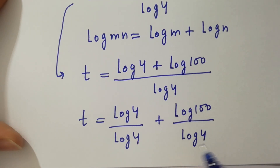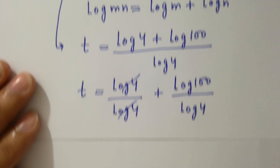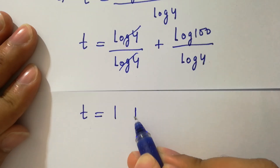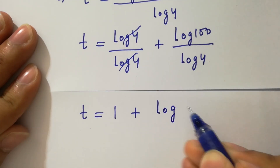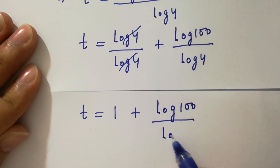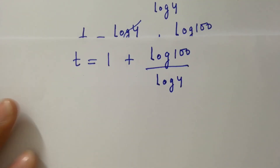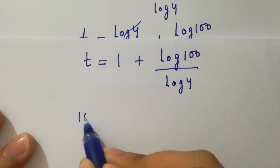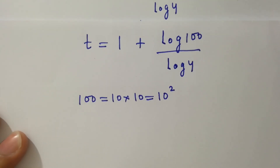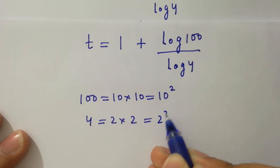Where log 4 cancels, since log 100 over log 4 remains. We note that 100 equals 10 times 10, which is 10 squared, and 4 equals 2 times 2, which is 2 squared.